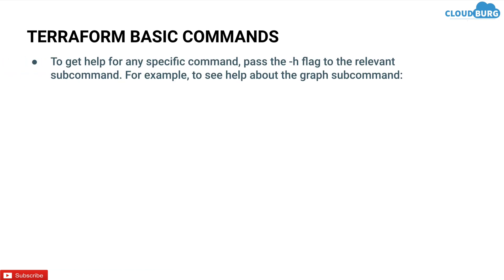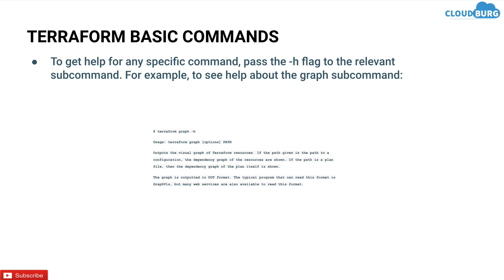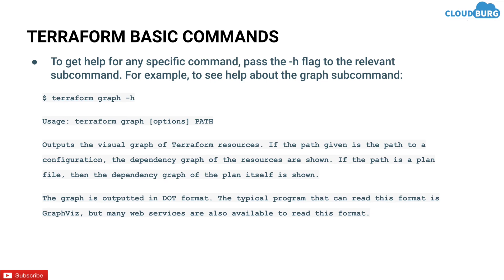Next is version — using terraform version you can check the running Terraform version on your local machine. To get help for any specific command, you can pass the -h flag to the relevant subcommand. For example, to see help about the graph subcommand you can run terraform graph -h.